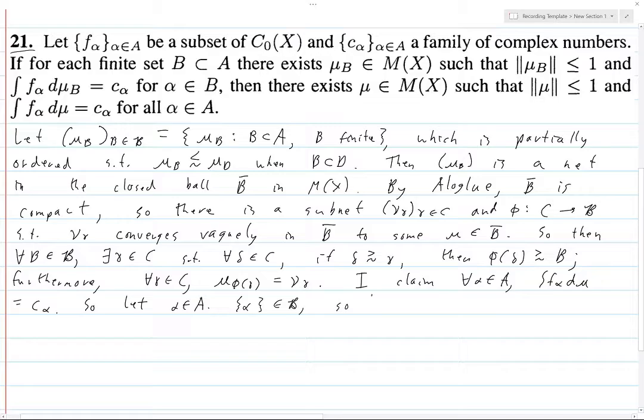The singleton set alpha is contained in B, so by assumption, the integral of f_alpha d mu_{singleton set gamma}. God, I wish this was a better thing to use. Gammas are hard to write. Not as hard as nu's, but they're sort of there. So, by assumption, this equals this, period.